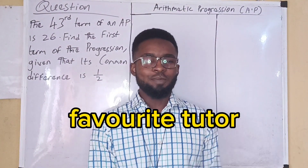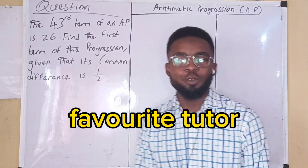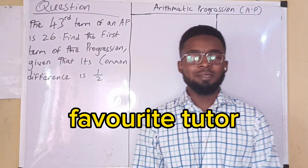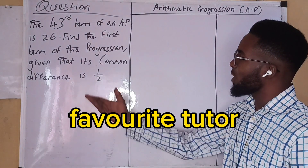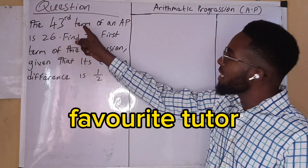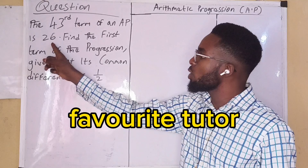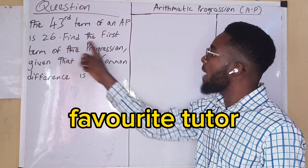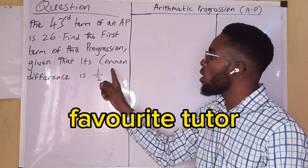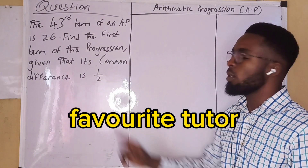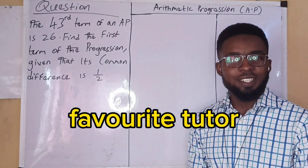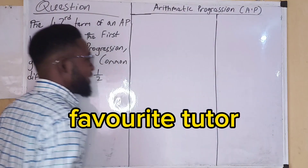Good day favorite! Welcome back to another episode of your favorite tutorial, and today is your favorite tutorial on mathematics. I have a question on the board: the 43rd term of an AP is 26. Find the first term of the progression given that its common difference is 1 over 2. It's very simple — just watch and learn.